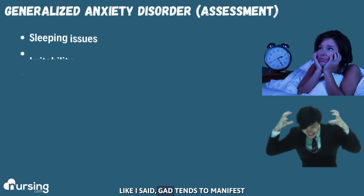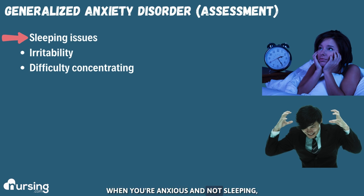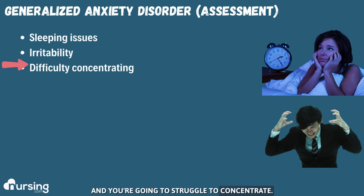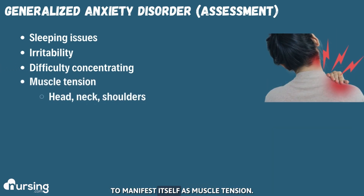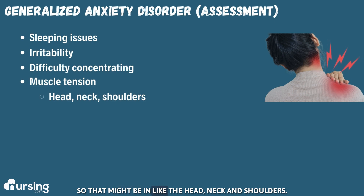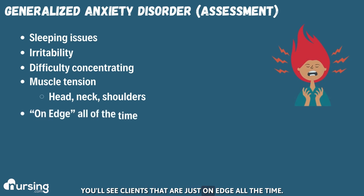GAD tends to manifest regularly into physical symptoms. They'll have sleeping troubles. When you're anxious and not sleeping, you're going to be irritable and you're going to struggle to concentrate — there's just too much on your mind. And then this anxiety starts to manifest itself as muscle tension, which might be in the head, neck, and shoulders. You'll see clients that are just on edge all the time.